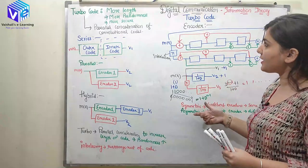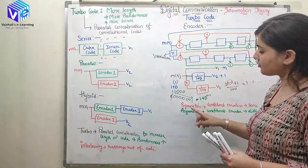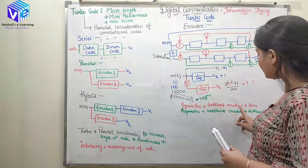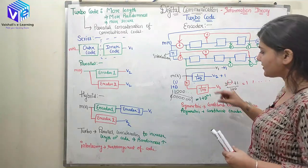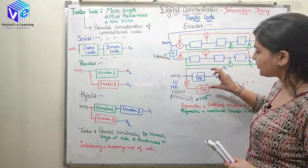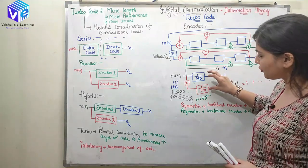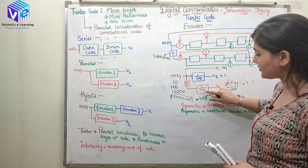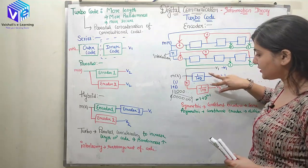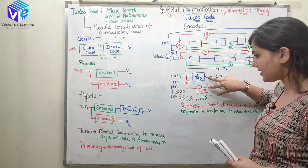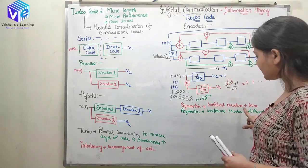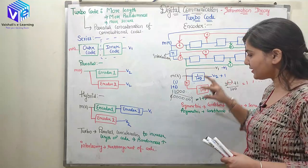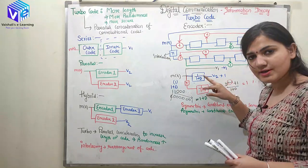I have two types of turbo code. First is symmetric — symmetric is when the constituent encoders are same. These are two encoders: this is the first encoder and this is the second encoder. If I take these two as same, this is my symmetric case. In asymmetric, these two encoders would be different.